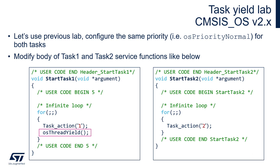Within main.c we will modify the body functions for both tasks. Within Task 1 we will remove everything inside the while loop, keeping only task_action_1, and we will add the osThreadYield function after it. Within startTask2 we will keep only task_action with argument 2 inside the infinite loop. Then let's compile the code and start a debug session.